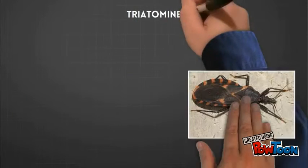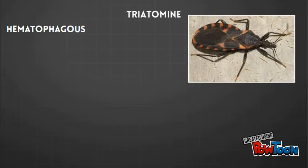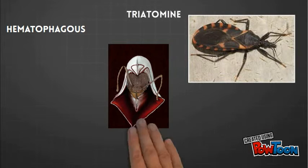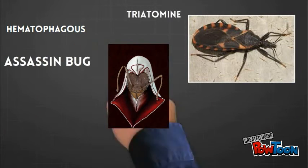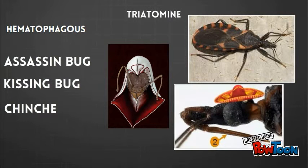The primary vector for Chagas disease is the triatomid family of insects. These are hematophagous, or blood-feeding insects. Other names for these insects include assassin bug, kissing bug, or the local favorite, chingche.